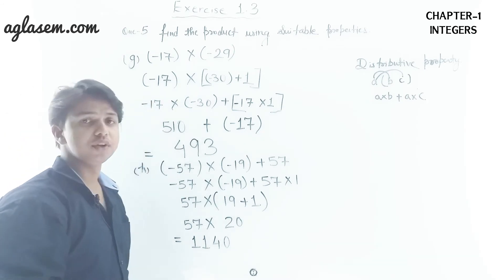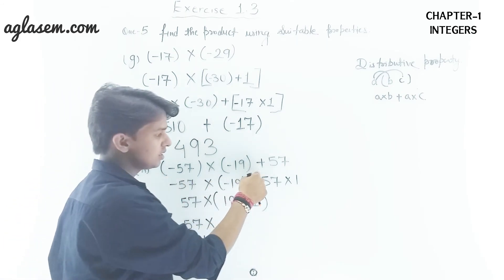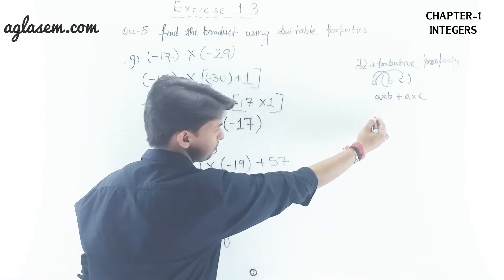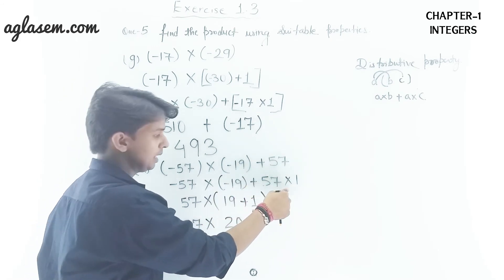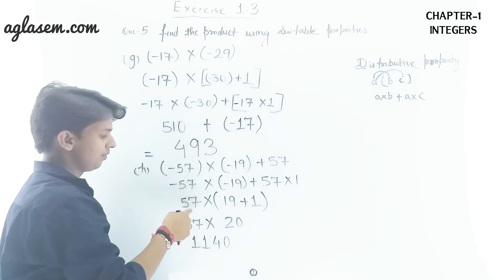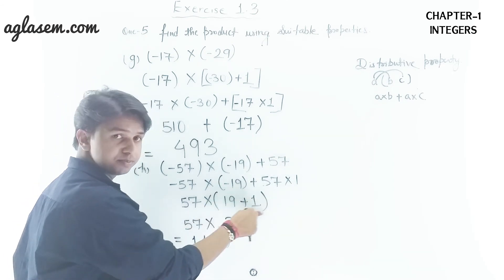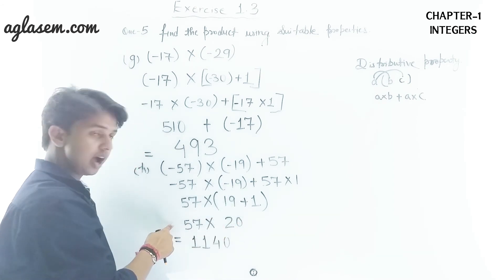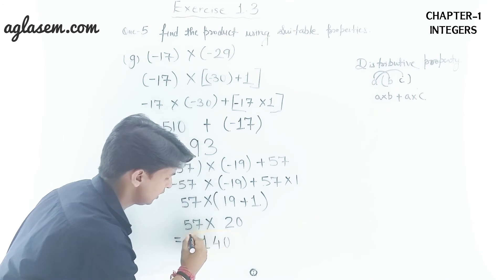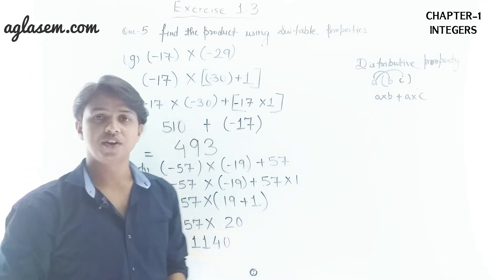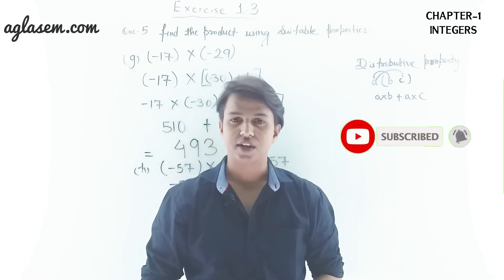Part h: (−57) × (−19 + 57). Using the distributive property, we split into (−57) × (−19) + (−57) × 1, then regroup as 57 × (19 + 1) = 57 × 20 = 1,140. This is the answer for Part h. Thank you for watching Aglasem School. For more NCERT videos, subscribe to our channel. Bye bye, take care.